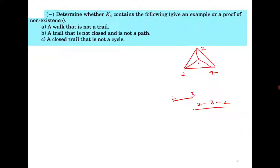A trail that is not closed and is not a path — consider a triangle with an extra edge: vertices 1, 2, 3, 4. You can go from 1 to 2, 2 to 3, 3 to 1, then 1 to 4. It is not closed, it is not a path since vertex repetition could occur, but it is a trail.